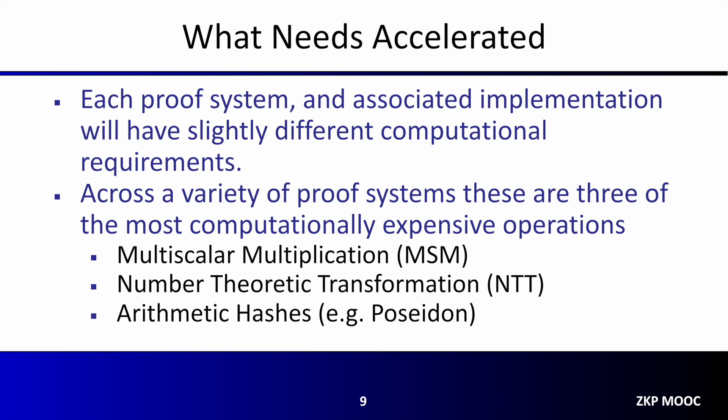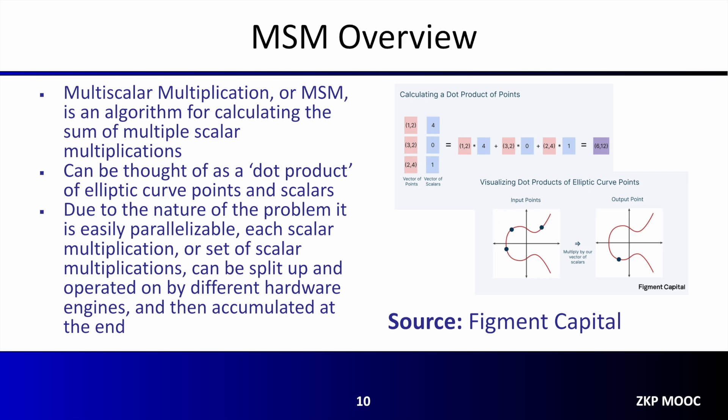The first primitive we'll tackle is multi-scalar multiplication, or MSM. MSM is an algorithm for calculating the sum of multiple scalar multiplications — alternatively, it can be thought of as a dot product of elliptic curve points and scalars. Due to the nature of the problem, it is very easily parallelizable. Each scalar multiplication or set of scalar multiplications can be split up and operated on by different hardware engines and then brought together and accumulated at the end.